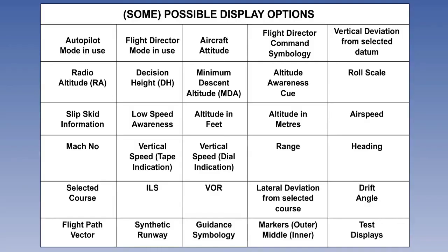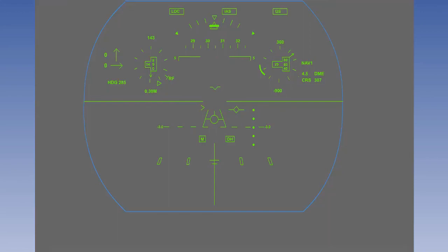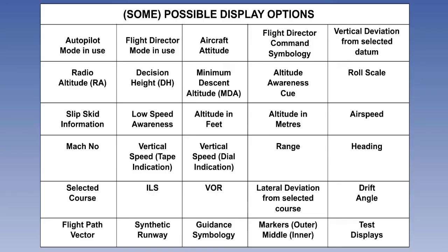What is actually available on any particular display will depend on the manufacturer and the customer's requirements. We looked at various displays and some of their associated symbology and concluded that basically just about any information generated within the aircraft can be displayed if the customer requires it.